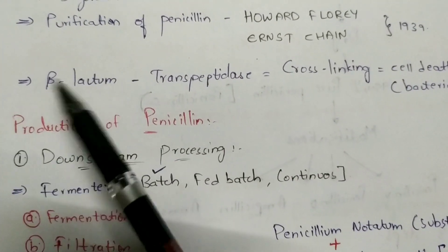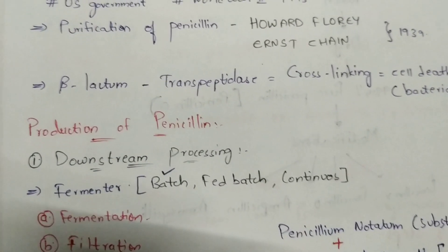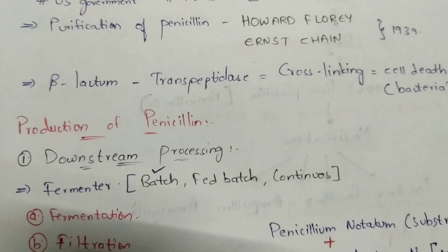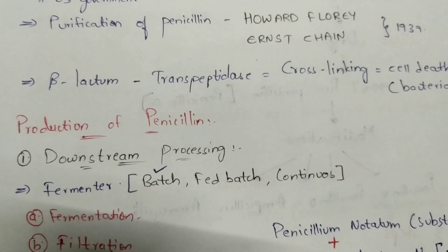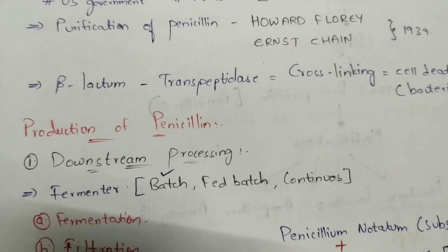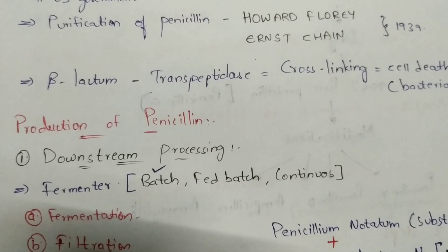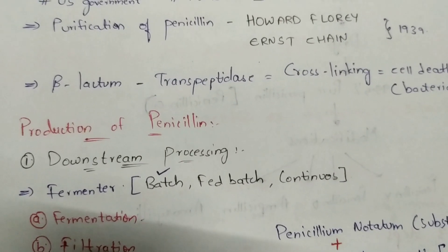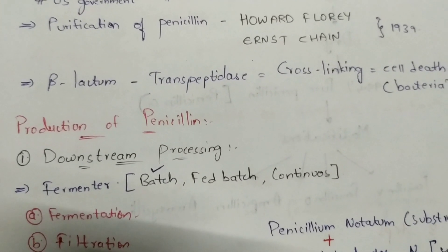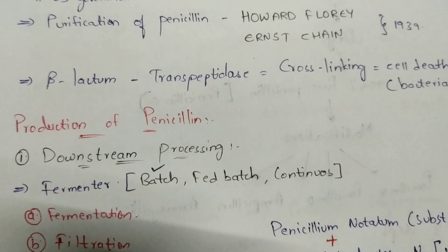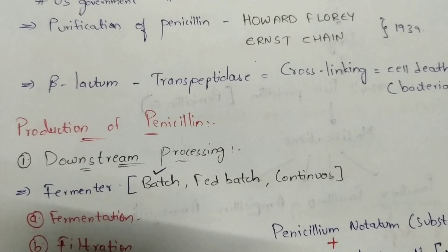This process takes place in our body, specifically in the liver, where the metabolism occurs. When metabolism takes place, the waste material gets excreted out of the body in the form of urine.